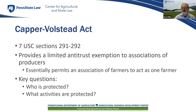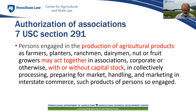Capper-Volstead protects consumers from market disruptions and essentially lets a cooperative act as one farmer — there's no antitrust problem if we view the cooperative as an individual farmer. The first section of Capper-Volstead protects 'persons engaged in the production of agricultural products as farmers, planters, ranchmen, dairymen, nut or fruit growers.' It allows them to act together with or without capital stock — addressing the Clayton Act problem — to collectively process, prepare for market, handle, or market the products.